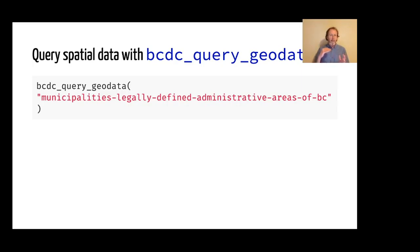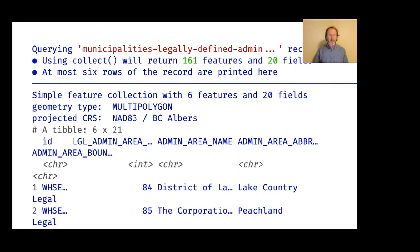When we run this function just by itself, similar to dbplyr if you've used it to interface with databases using dplyr syntax, it doesn't actually get the data right away. It gives you a promise — an object that tells you what you're going to get when you finish building your query and ask for the data. If you run that function with the name of a record — here we're looking at municipalities in the province — it gives you a message saying that using the collect function will return 161 features in 20 fields, and at most six rows are printed as a preview.